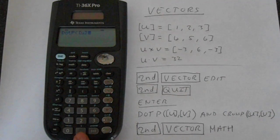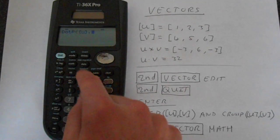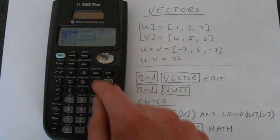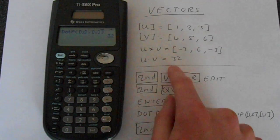And then second function, you've got the comma on the dot down here. And then second function, and then vector, and 2, and then equals, and we get 32 as expected.